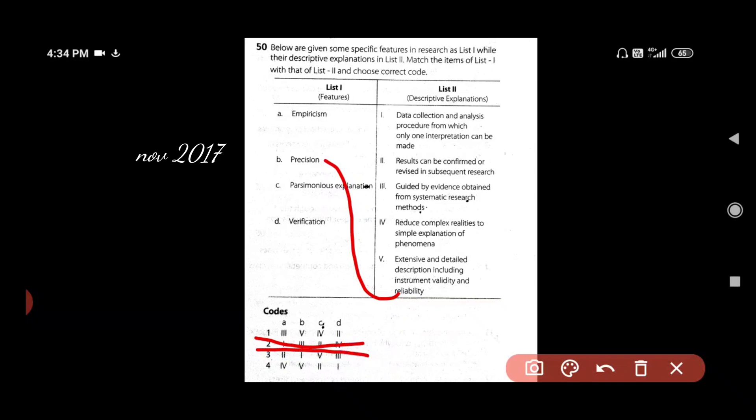A parsimonious explanation. Reduce complex realities to simple explanation of phenomena. So since C is 4, our answer will be number 1. So empiricism will be guided by evidence obtained from systematic research and research methods. Verification will be results can be confirmed or revised in subsequent research.